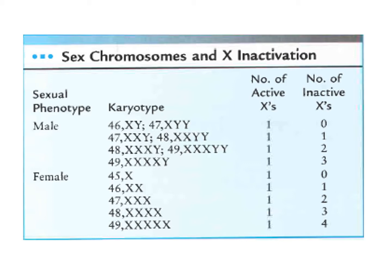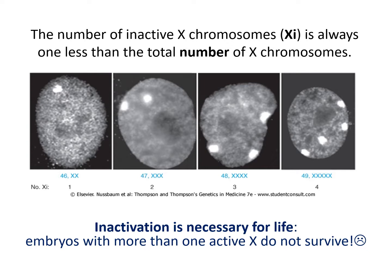The number of inactive Xs is always one less than the total number of X chromosomes. Inactivation is extremely necessary for life — embryos that have more than one active X do not survive. If something happens during development to prevent X inactivation, such embryos will not survive.